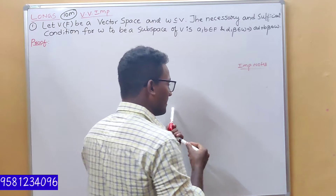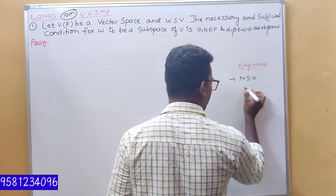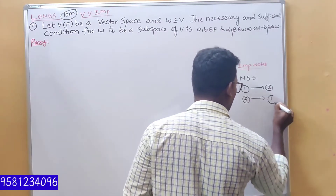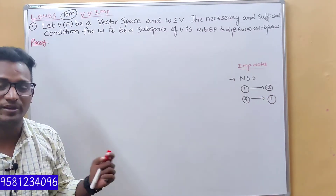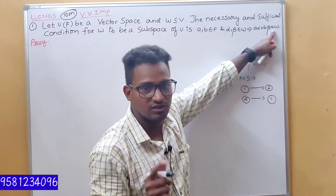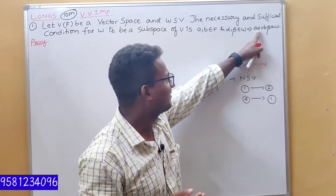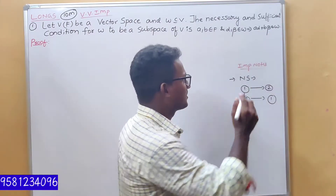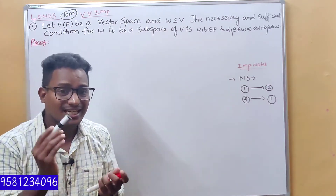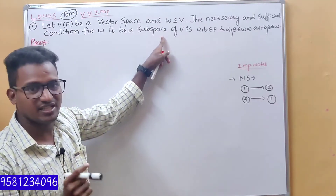This is the third step. If the necessary and sufficient condition holds, there will be two parts. Part 1 will prove, and Part 2 will prove. The clear first point: A·alpha plus B·beta belongs to W. This is the necessary and sufficient part — to prove W to be a subspace.